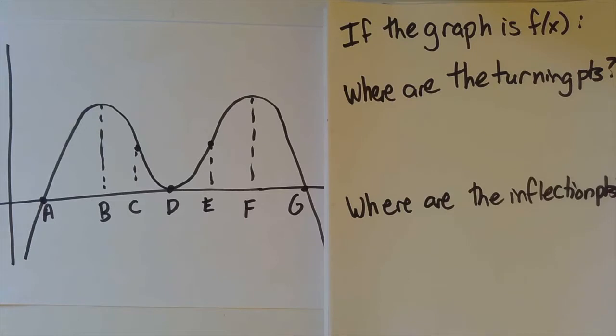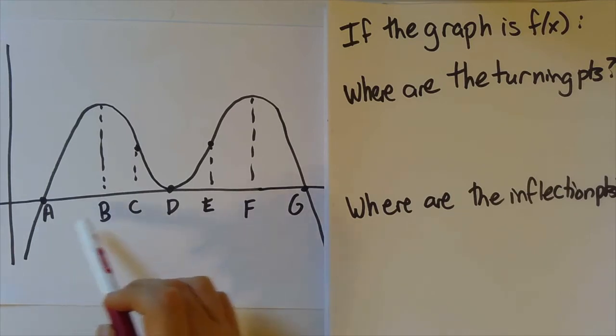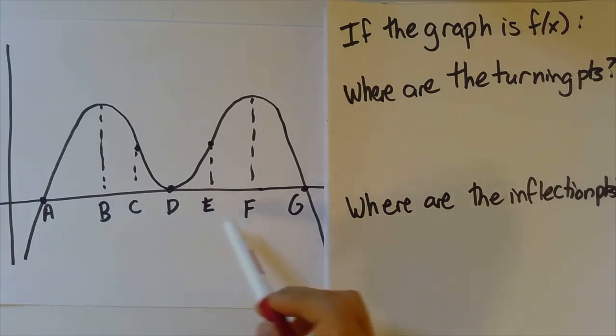I've labeled all the relevant x-values, so this is really sort of a multiple choice question where we're looking for things like a, b, c, d, e, f, g to pick out.